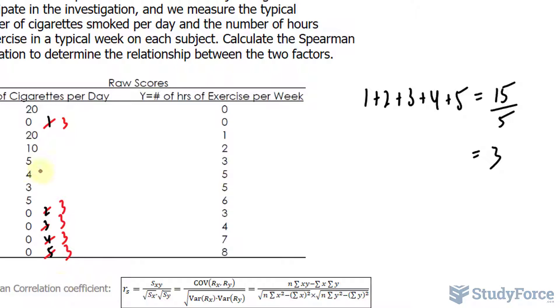The next lowest number is three. That gets a rank of six. Then comes four. That's ranked seventh. We have two observations with five. The next in line is eight and nine. Let's add those up, eight plus nine is 17, divide 17 by two is 8.5. So that's ranked 8.5 and so is this one.